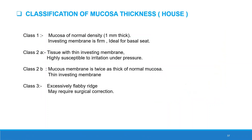Classification of oral mucosa. House classified oral mucosa into three types. Class 1 is mucosa of normal density, 1 mm in thickness; the investing membrane is firm and ideal for basal seat. Class 2A has a thin investing membrane and is highly susceptible to irritation under pressure. Class 2B has mucous membrane twice as thick as normal mucosa with a thin investing membrane. Class 3 is excessively flabby tissue, which may require surgical correction.